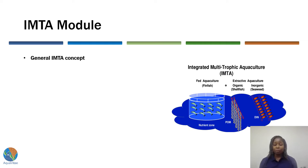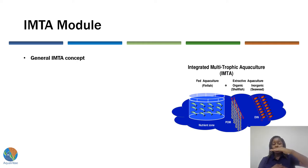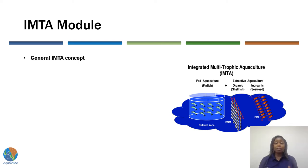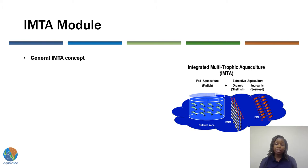Under the General IMTA Concept topic, we will talk about the background of IMTA. IMTA is the co-culturing of animal or plant species from different trophic levels, meaning they feed at different levels. For example, one aquaculture species gets fed, produces waste, and that waste becomes nutrients for another species feeding below it in the trophic levels. We will cover the history of IMTA, how to decide on species to integrate, IMTA's relation to the circular economy, monoculture versus polyculture, and how waste is managed in an IMTA system.